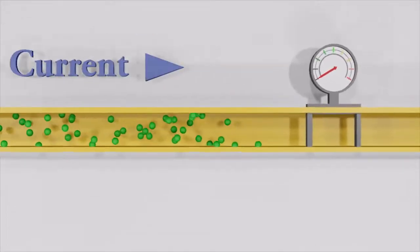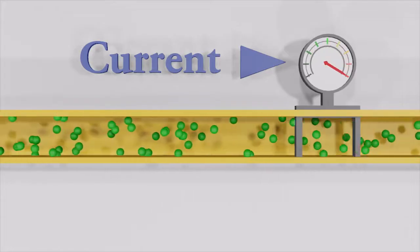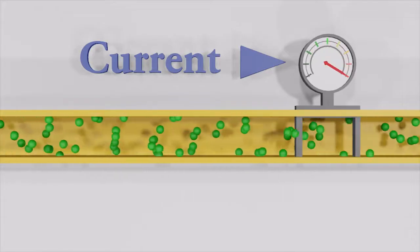Here we have very high current because the conductor has no resistance to slow down the electrons. They move at full speed.